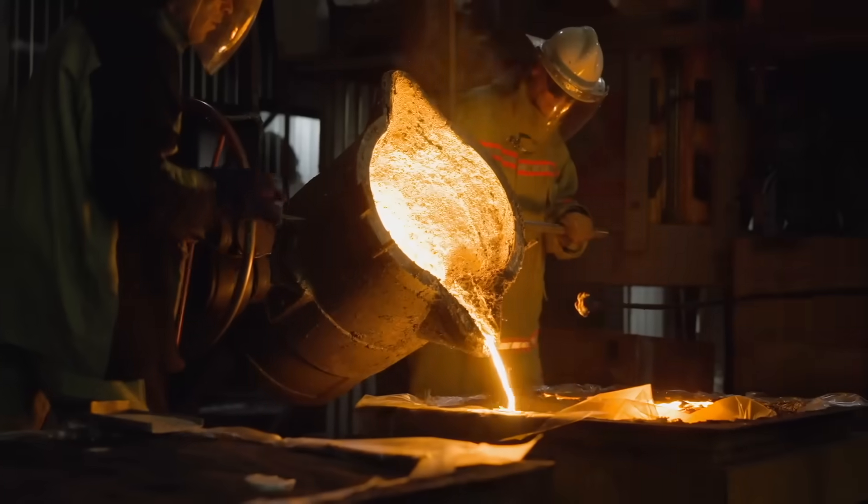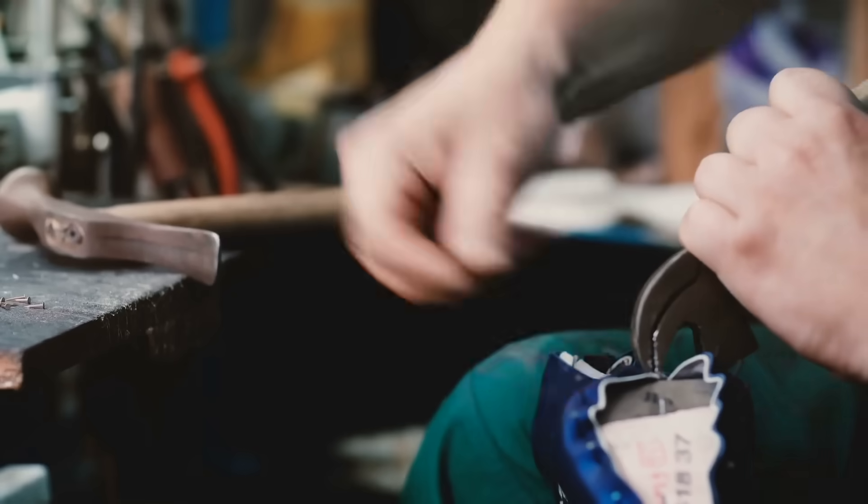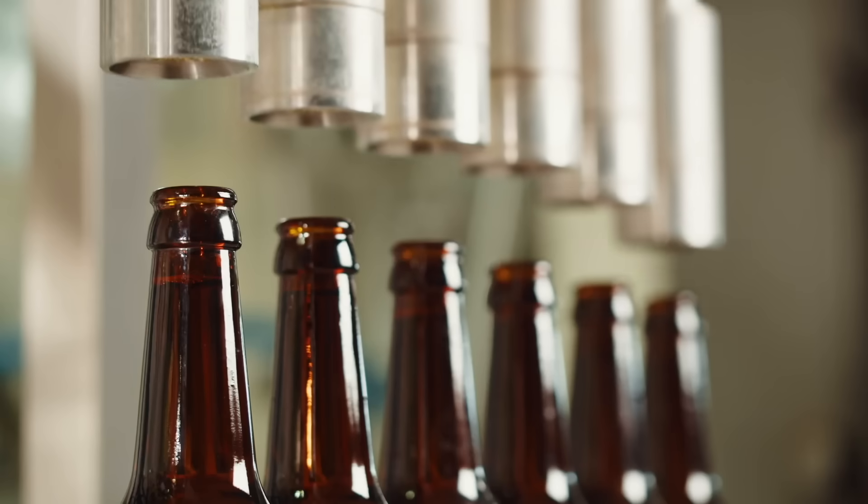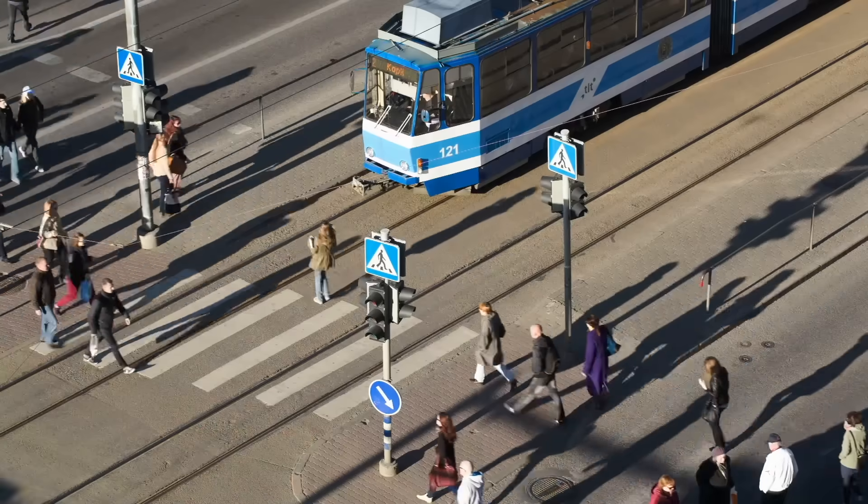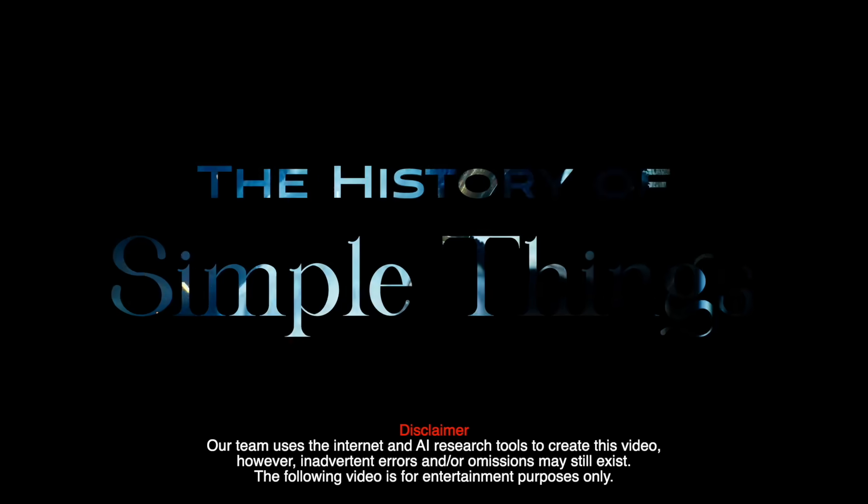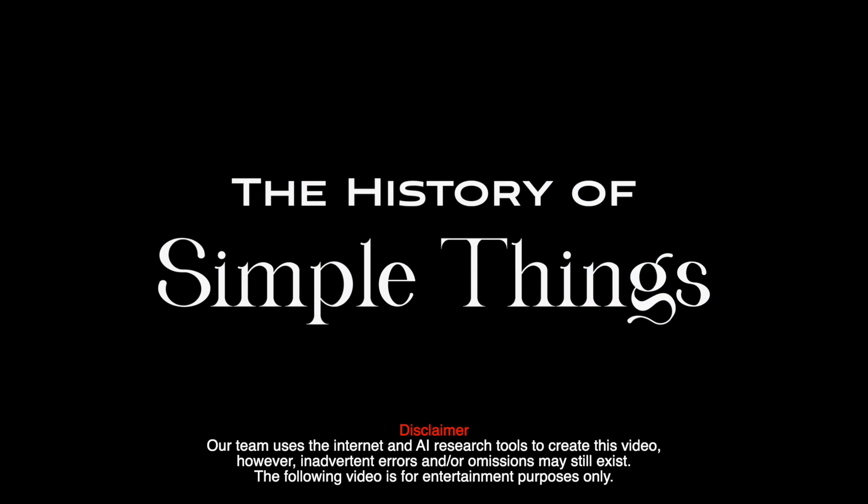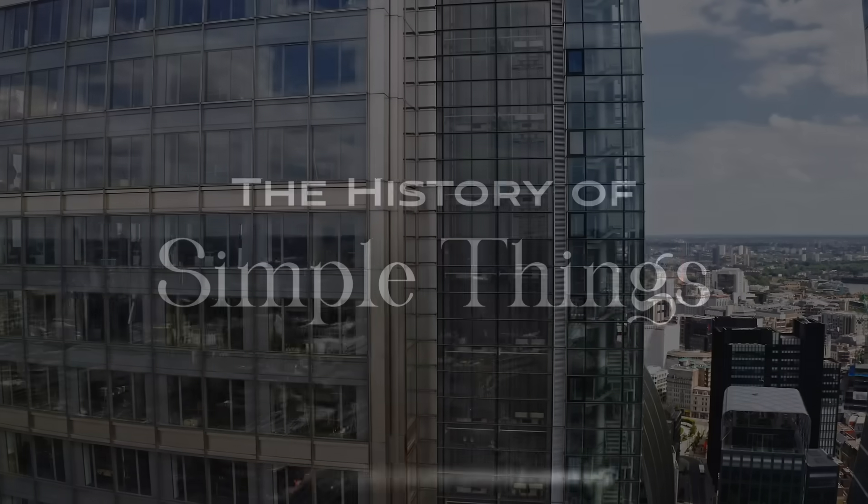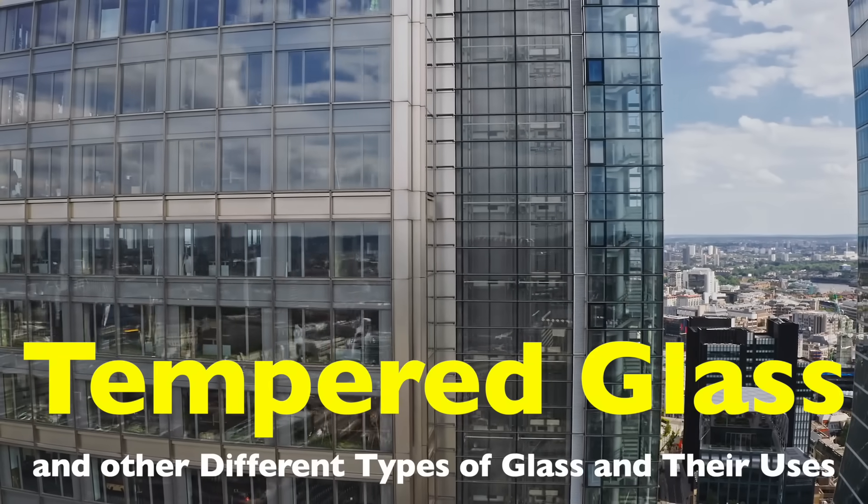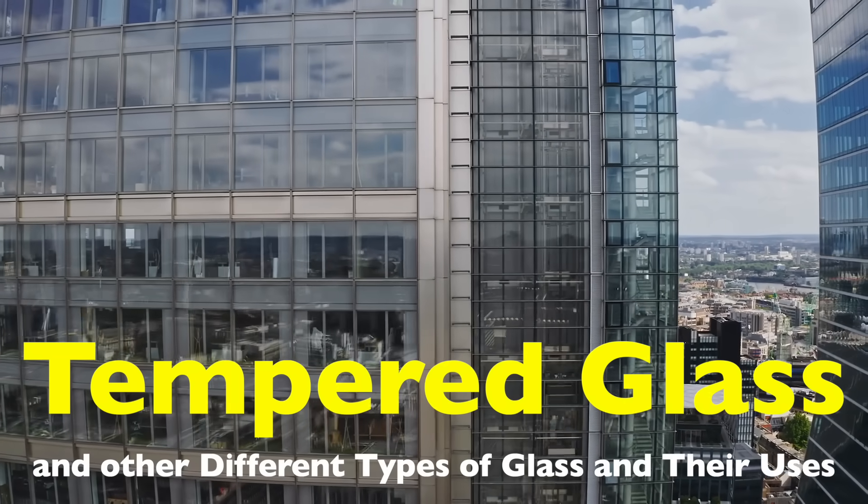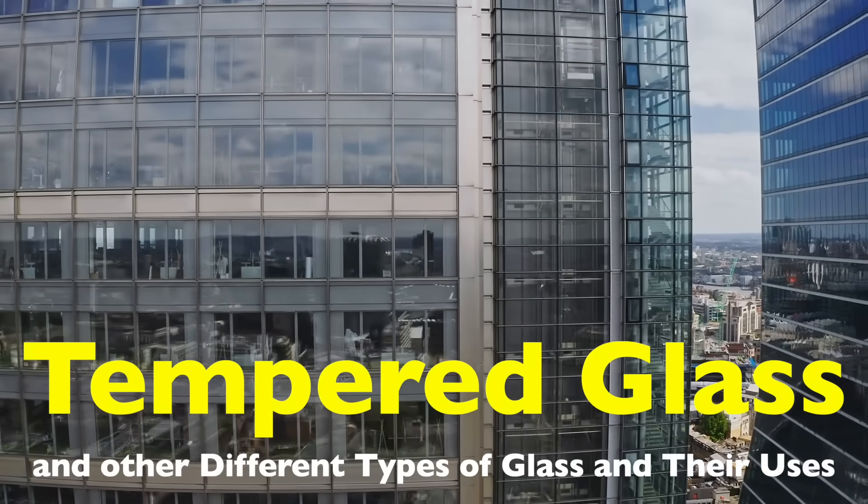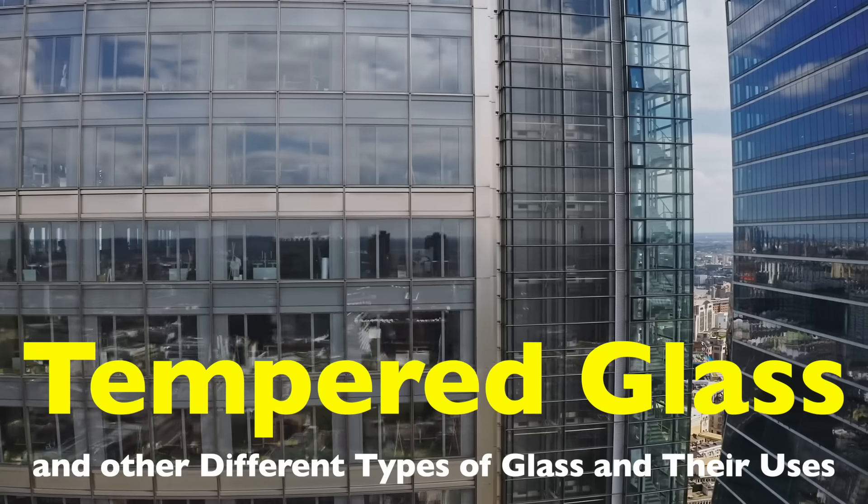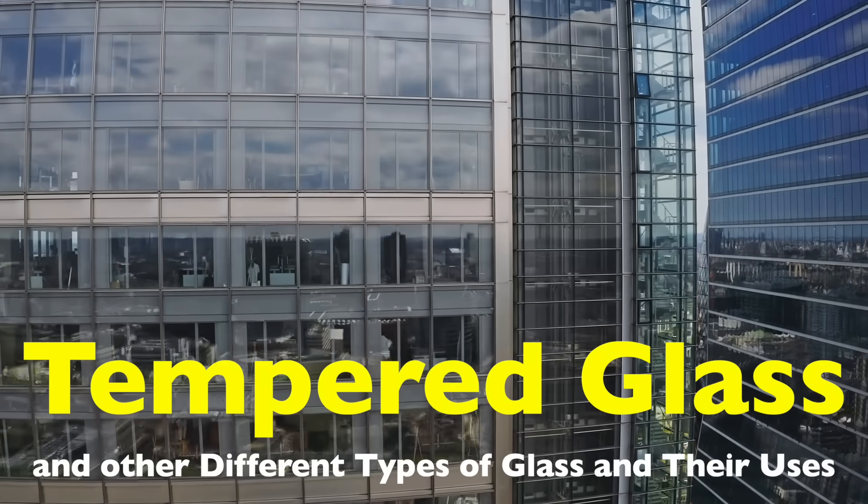Welcome to the History of Simple Things, where we delve into the fascinating history behind the little things that shape our world. Glass is one of the most versatile and widely used materials in the world. From the windows in our homes and cars to the screens on our smartphones and the facades of skyscrapers, glass plays a crucial role in our daily lives.